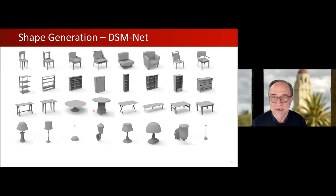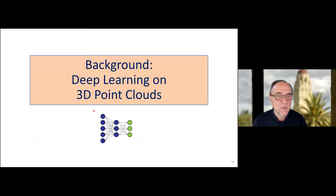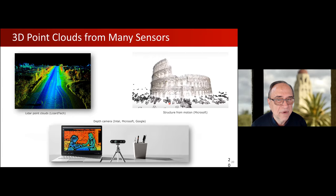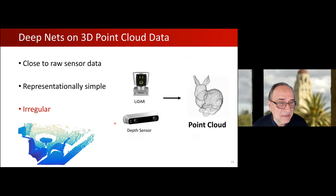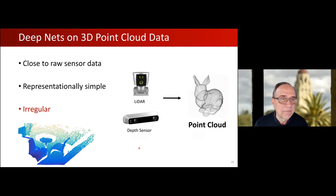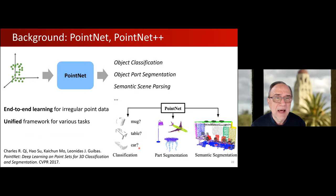Background number two is deep learning on 3D point clouds. Point clouds are an extremely common modality now, coming from LiDAR, from depth cameras, and from classical computer vision algorithms like structure from motion. They are close to the sensor and very simple — just a bag of points — but they are irregular. Compared to images, which are regular pixel grids, here the points come at different densities: much more dense near the sensor and much sparser away from it. Also the neighborhood structure of each point is different, which means traditional convolutional architectures cannot be applied. One of the key efforts in my group over the past five years has been developing point cloud deep architectures — what we call PointNet++ — that replicate in the point cloud domain what was done in the image domain for object classification, segmentation, scene understanding, and so on. This work started a big wave of effort in the community and has many thousands of citations now.